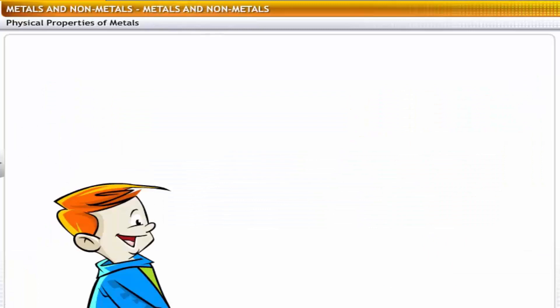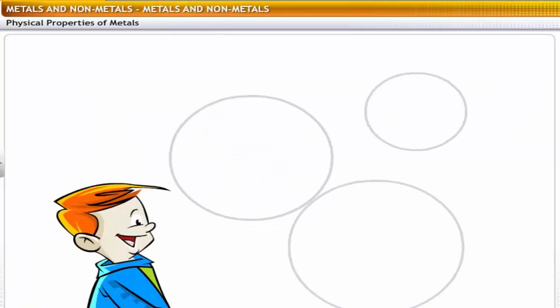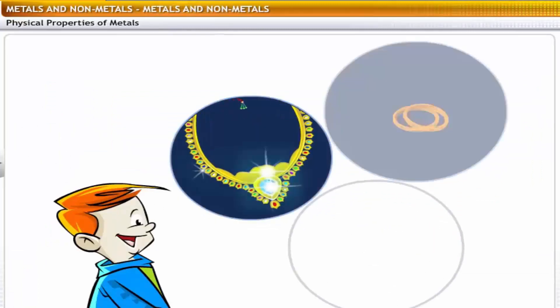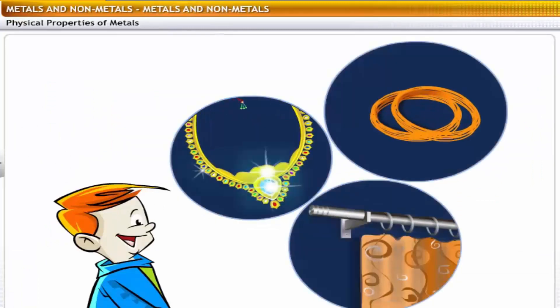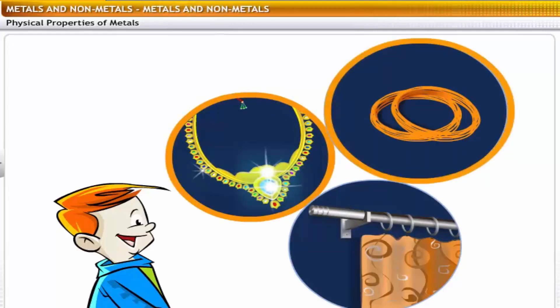If you look around, you will find metallic objects in various forms. For example, jewelry made of gold and silver, wires made of copper and curtain rods made of aluminum are all metallic objects.